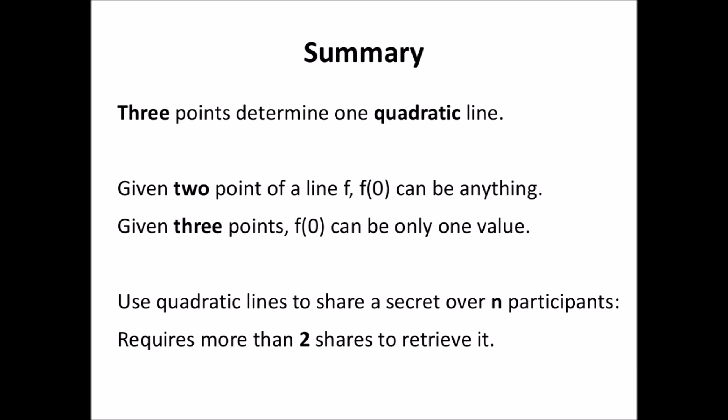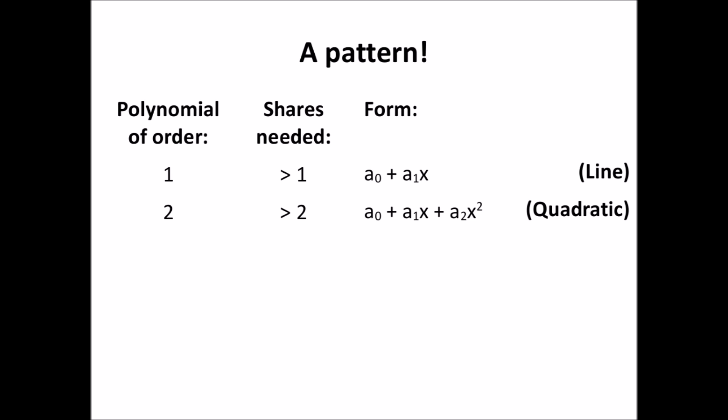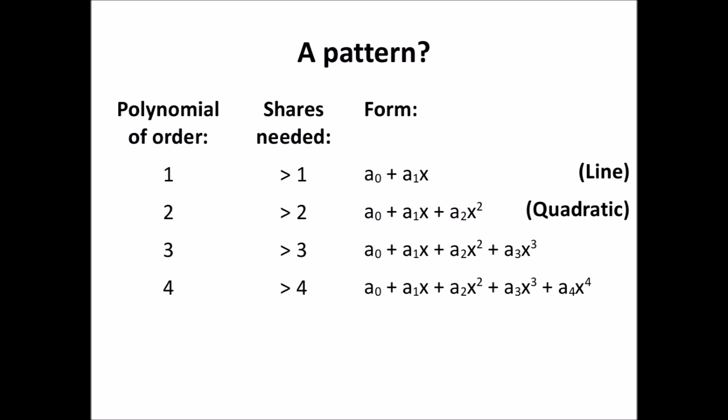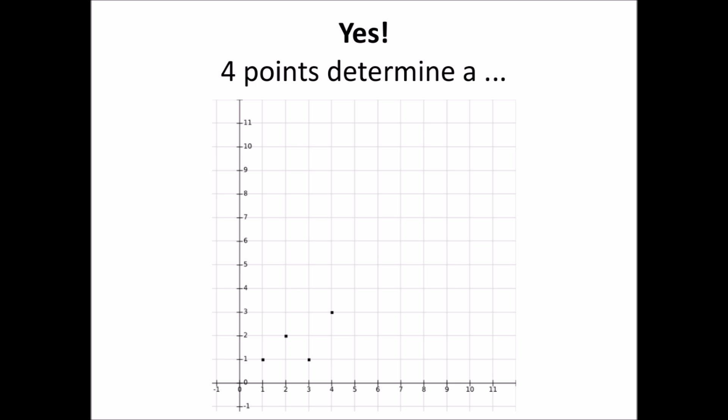Again, following our summary: if we use a quadratic line to share a secret, more than two shares are needed to retrieve that secret. Now, we can see a pattern emerging here. If we use a polynomial of degree 1 to split the secret, we need more than one share to retrieve it. If we use a polynomial of degree 2, we need more than two shares. So the question is: does this pattern really continue? If we have a polynomial of degree 3, do we need more than three shares to retrieve it? And it turns out that, yes, there is a pattern.